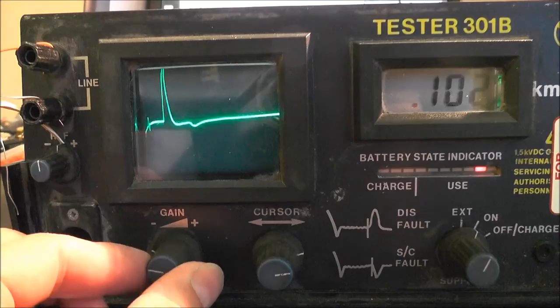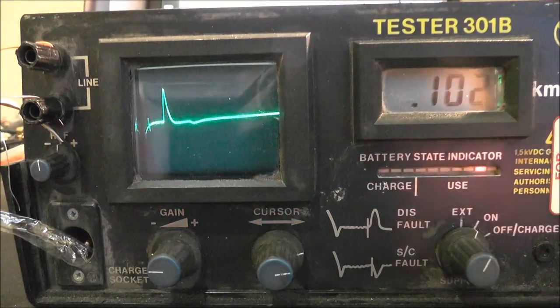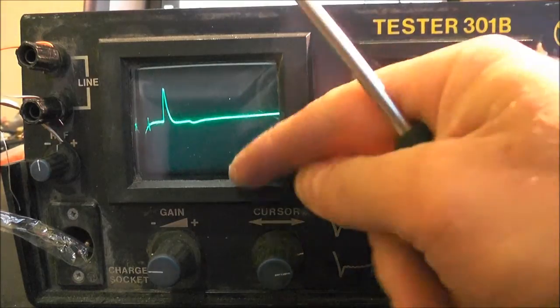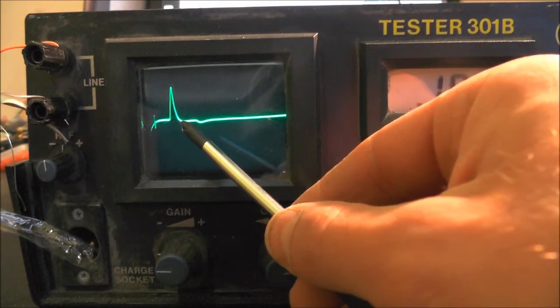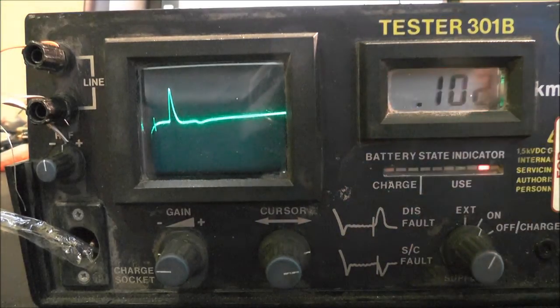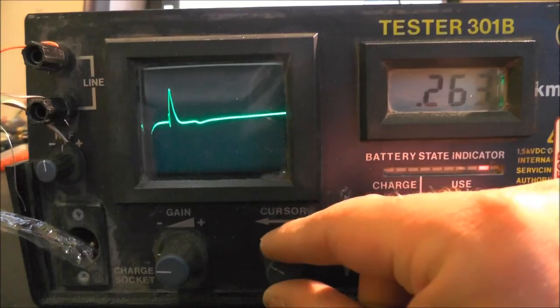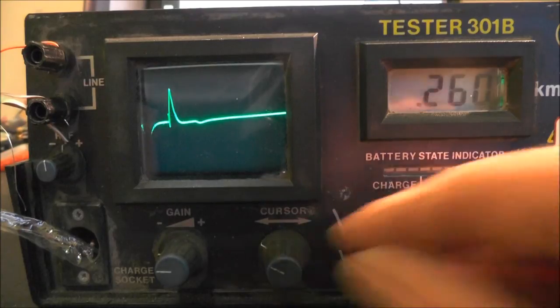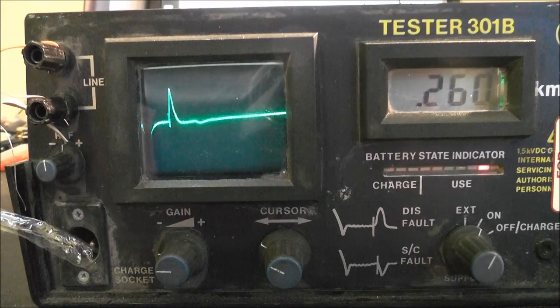So at the moment here we've got the cursor which moves with the adjustment knob. Then we've got the reflected pulse back. My screwdriver actually affects that. So if we adjust this up to the starting point of the reflection we get a measurement of 260, which is probably about right because I know I have used some of the cable out of this box.